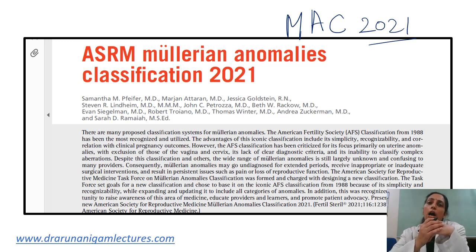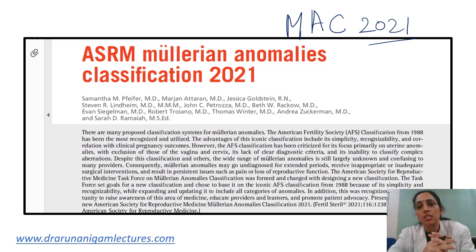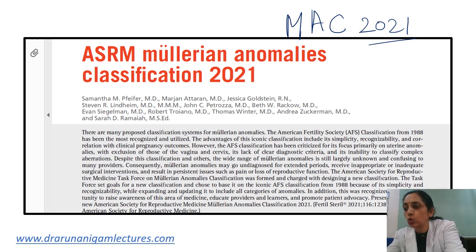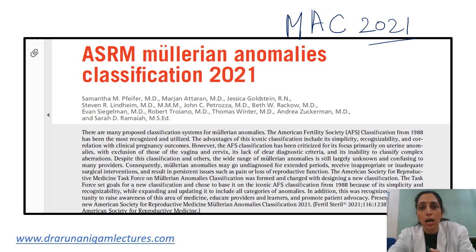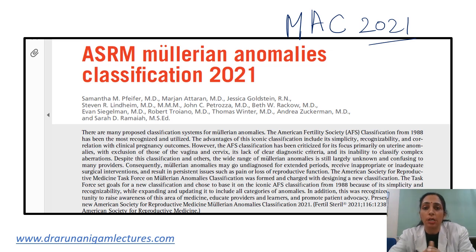After forming the task force, they analyzed all articles from 1949 to 2018, finding around 2,499 articles comprising 1,607 Mullerian anomalies and 892 anomalies associated with other malformations. They categorized and studied all the articles, reviewed subclassifications, and then made this MAC 2021 for educational and management purposes.